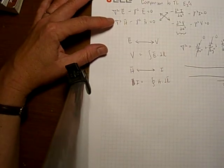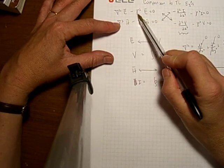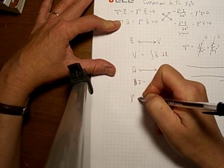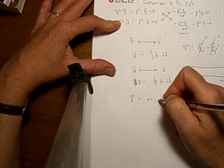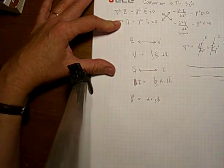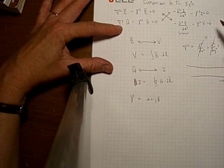The third similarity is that we have the complex propagation coefficient in both cases. Gamma is alpha plus j beta, whether we're discussing electric fields or voltages or currents.